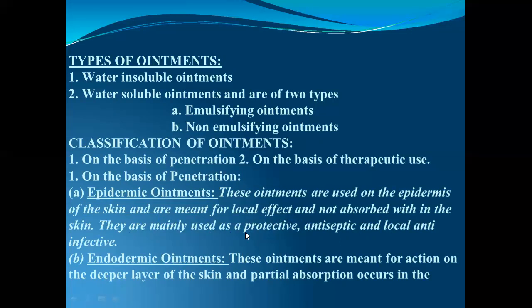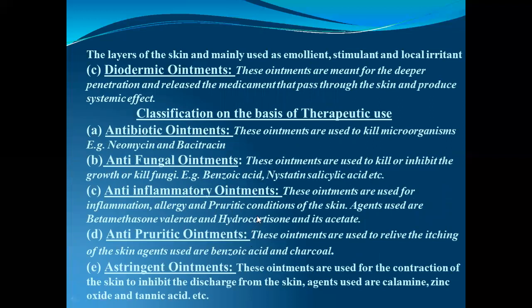Protective means we want to protect our skin from dehydration; antiseptic to kill germs on the surface of the skin; local anti-infective against any microorganisms. The second type is endodermic ointments — these are meant for action on the deeper layers of the skin, where partial absorption occurs, and are mainly used as emollient, stimulant, and local irritant. The third type is diodermic ointments — these are meant for deeper penetration and release the medicament, meaning the active ingredient passes through the skin to produce systemic effect.